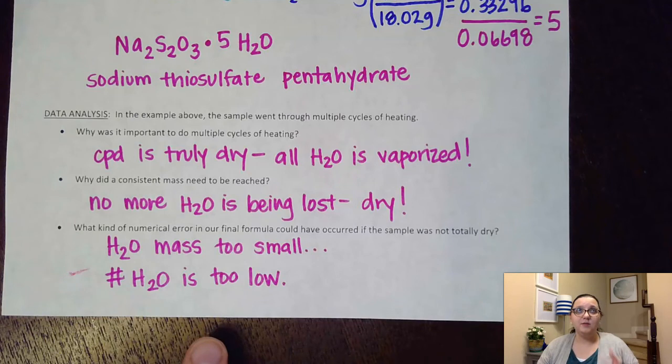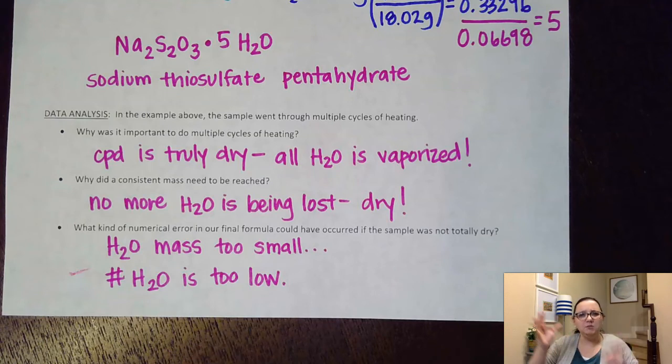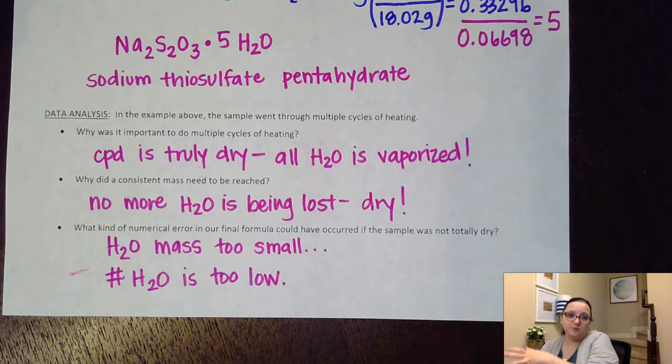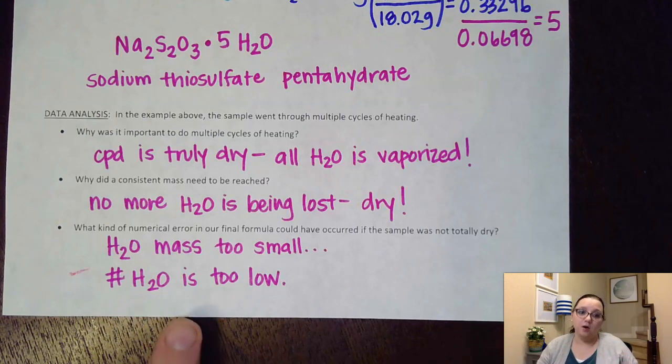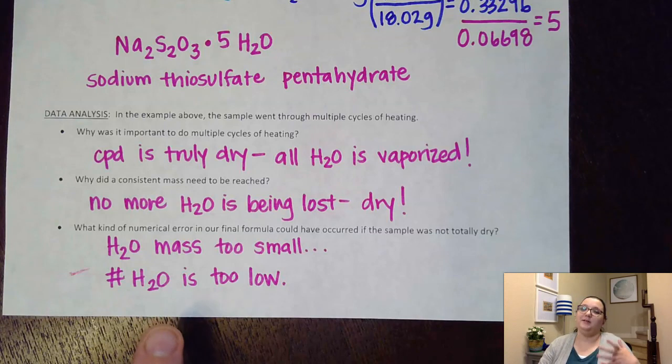Most of the time, your number of waters is too low versus too high because it wasn't totally dry, even though we thought it was. So I will tell you that very often on labs that involve hydrate problems, if you come out off but you come out kind of in between two waters, like let's say your data came out between four and five, I usually tell people to round up to five because it's more likely that your number of waters was too low. That's again a very, very common error there.